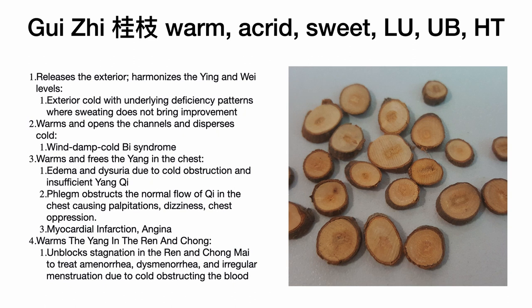Gui Zhi opens up and frees the yang in the chest. We can use it for edema and painful urination due to cold obstruction and insufficient yang qi. We can also use it when phlegm obstructs the normal flow of qi in the chest, causing palpitations, dizziness, and chest oppression — hence its entry into the heart channel. It can be used for myocardial infarctions and angina pectoris.